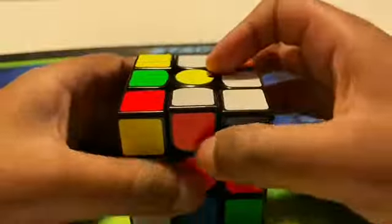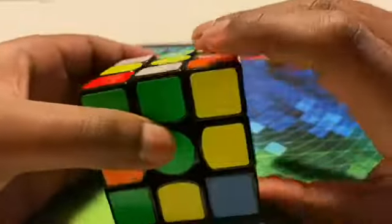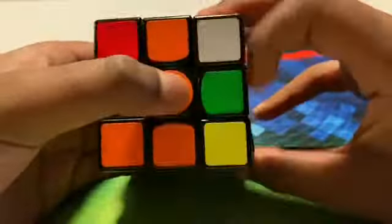This one's red, we line it up with the red and we turn it twice. Green, we line it up with the green center and we turn it twice. And orange, we line up with the orange center and turn it twice.